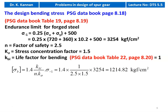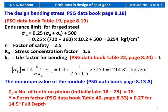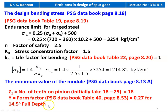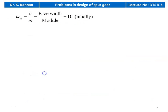Using the design bending stress, we calculate the module. To calculate minimum module, assume number of teeth on pinion Z1 = 18. From PSG Data Book page 8.3, table 40, for Z1 = 18, the form factor Y is 0.27 for 14.5° full depth gear. We take ψm = B/m = 10 initially.